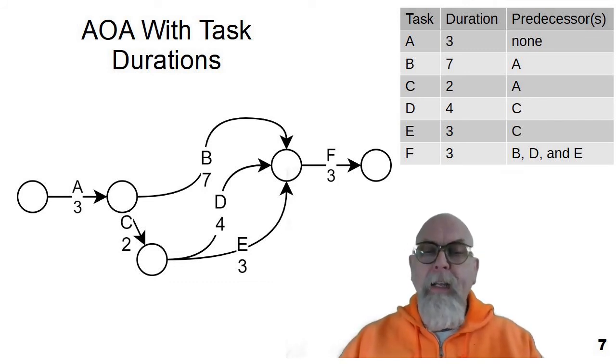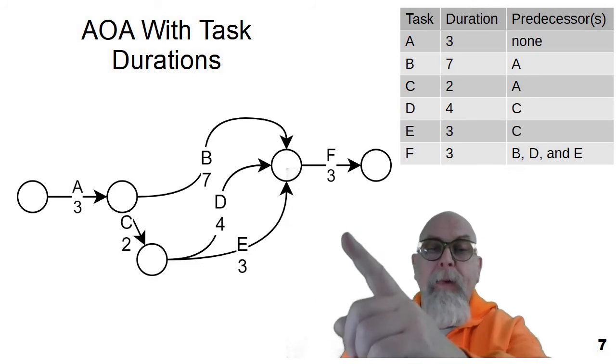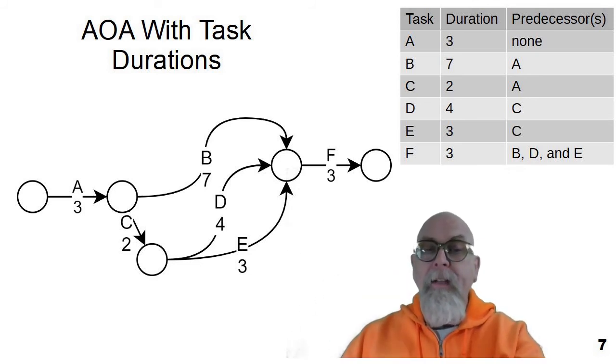Because both D and E move from the state of this node down here, where C ends, and they both go to this state here, where F begins. So we would have to make them curve or zigzag or something. So there would be this network represented by the AOA diagram.